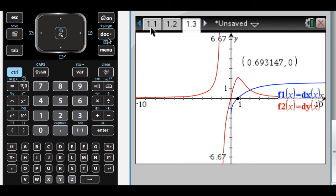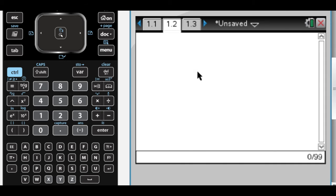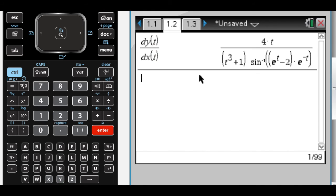The next question tells us that m of t is the slope, and we want an expression for m of t. So maybe I'll use this page here. I want an expression for m of t. So that's going to be dy of t over dx of t. So that's gross, but that's it.